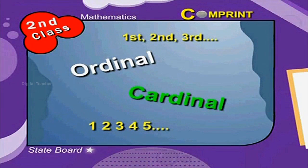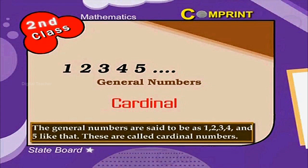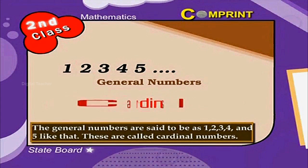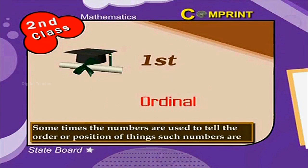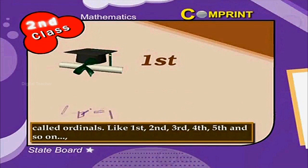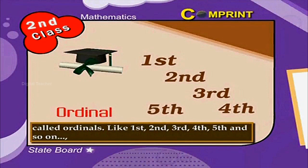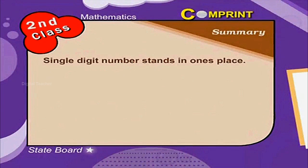Ordinal Numbers and Cardinal Numbers. The general numbers 1, 2, 3, 4, 5 and so on are called Cardinal Numbers. Sometimes numbers are used to tell the order or position of things. Such numbers are called Ordinal numbers, like 1st, 2nd, 3rd, 4th, 5th and so on.